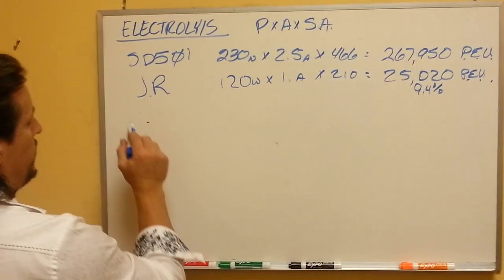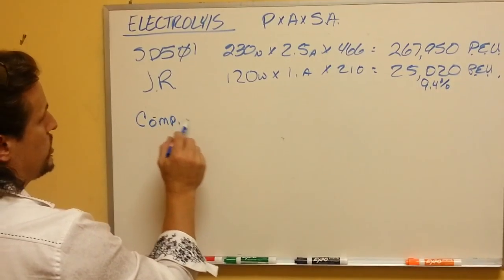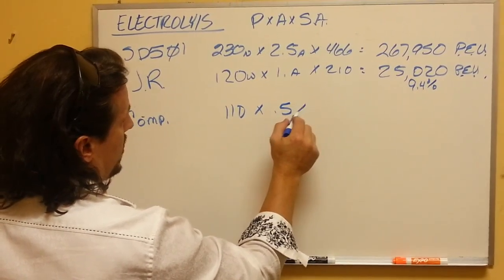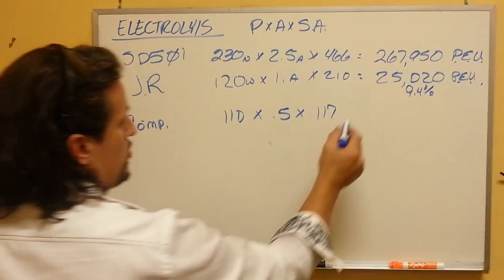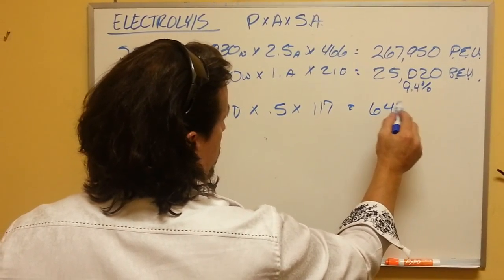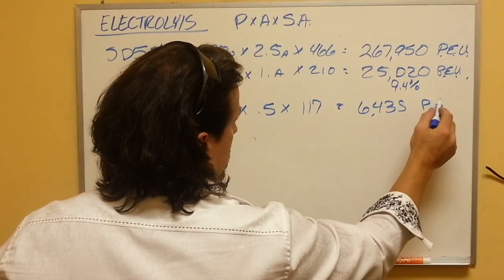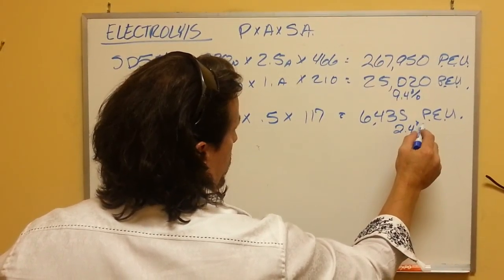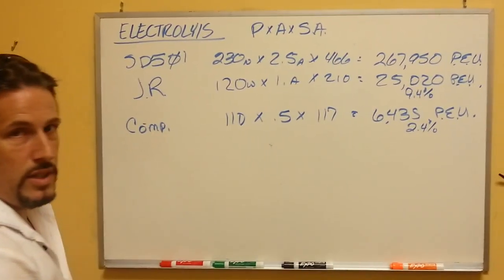However, if you take the average competitor's machine, they have 110 watts times a half amp times 117 square inches of plate space, or 6,435 PEUs. That's only 2.4% of the power of the SD501.